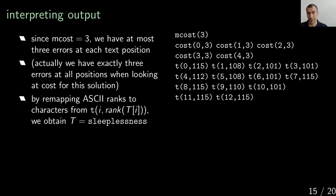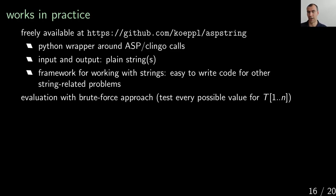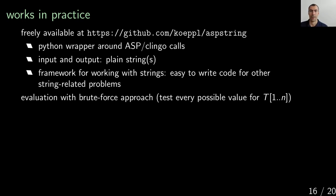The nice thing is it works in practice — code is available at the homepage, and there's a Python wrapper around the ASP and clingo calls, so you just provide plain strings as input and get plain strings back. It's also a framework where you can easily write code for other problems or improve the ASP solutions, as one CPM reviewer already did. You can also use it for benchmarks — for example, if you've written your own brute force approach testing every possible value for the target string.